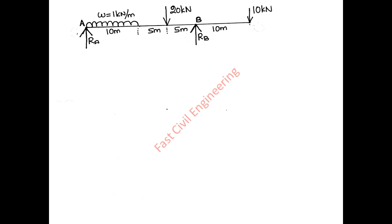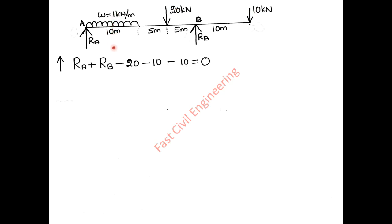Equilibrium Equation 1: summation of vertical forces equals zero. RA is upward, RB is upward, 20 kN is downward, and the UDL of 10 kN per meter over 1 meter gives 10 kN downward. Therefore RA plus RB equals 40 kN. That is Equation 1.